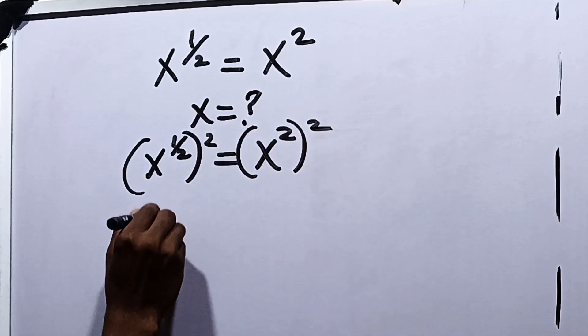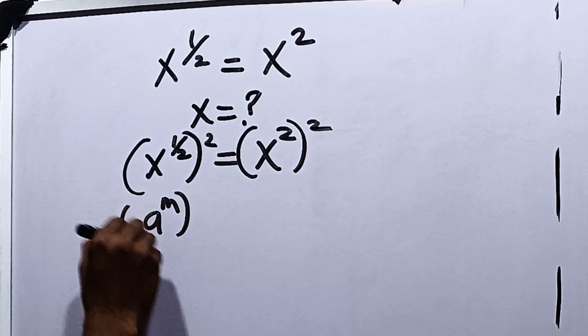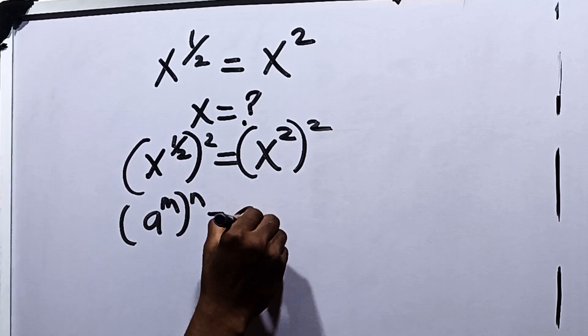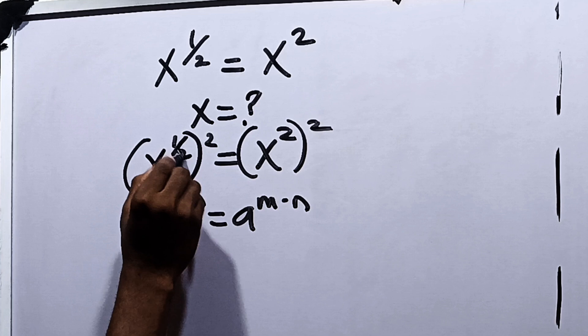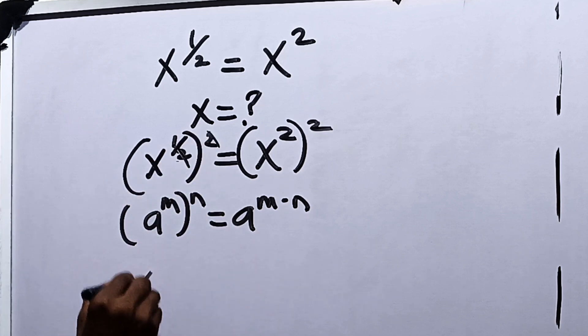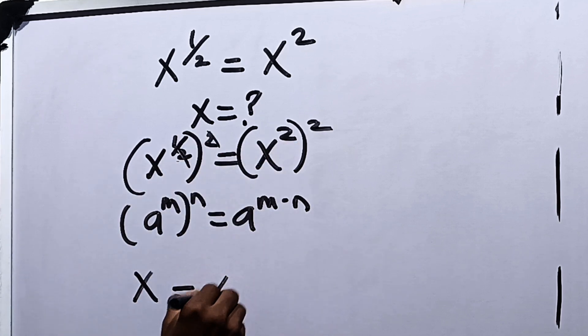Recall the law of indices that says that a raised to the power m raised to the power of n is equal to a raised to the power m multiplied by n. So here multiplying the powers, half times 2 gives us 1. So we have x is equal to, 2 times 2 is 4, x to the power 4.